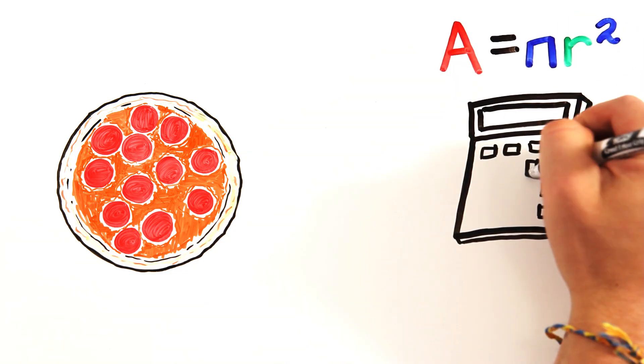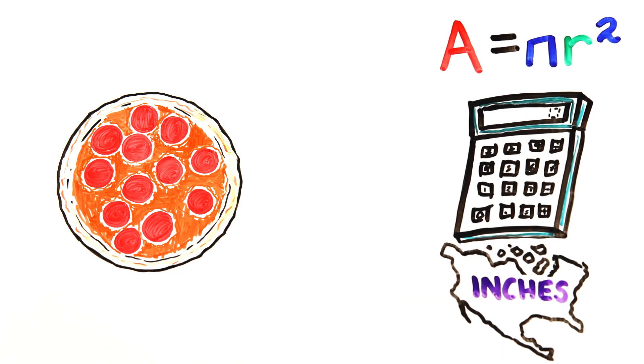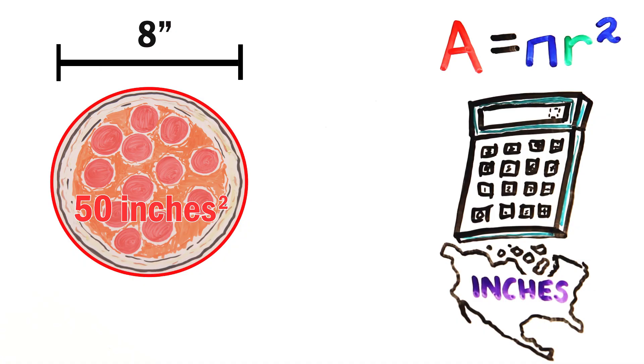If we plug in some numbers, you may notice something interesting. For example, since we measure pizza in inches in North America, the area of an 8 inch pizza is roughly 50 square inches. We simply take the radius of the pizza, which is half of the diameter, so 4 inches in this case, put it in the equation, and voila!